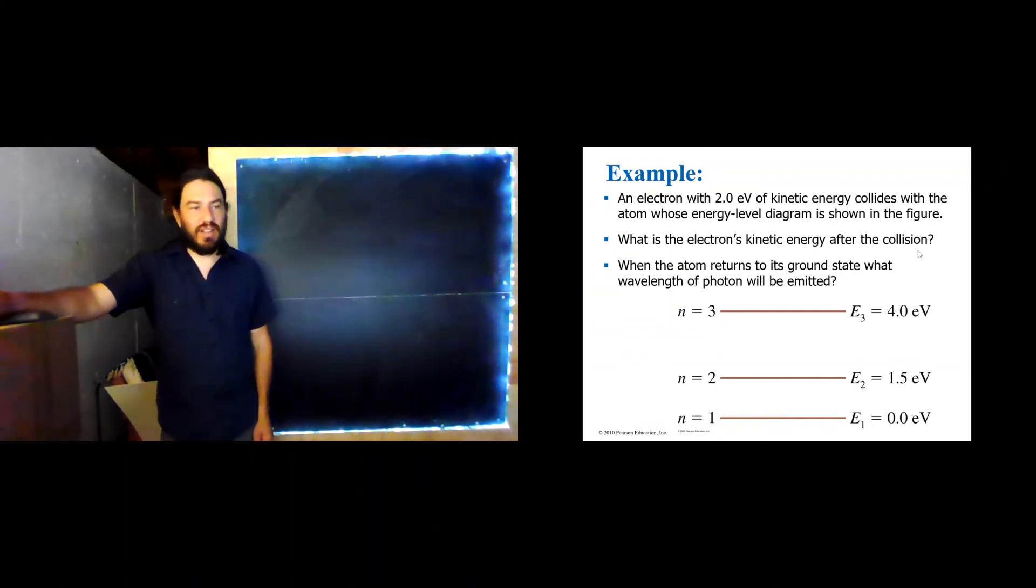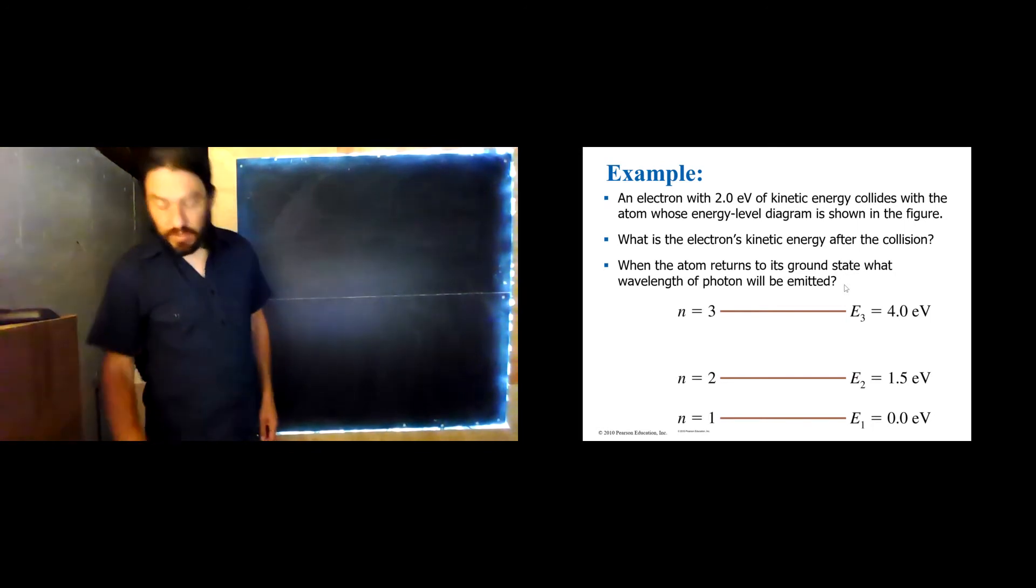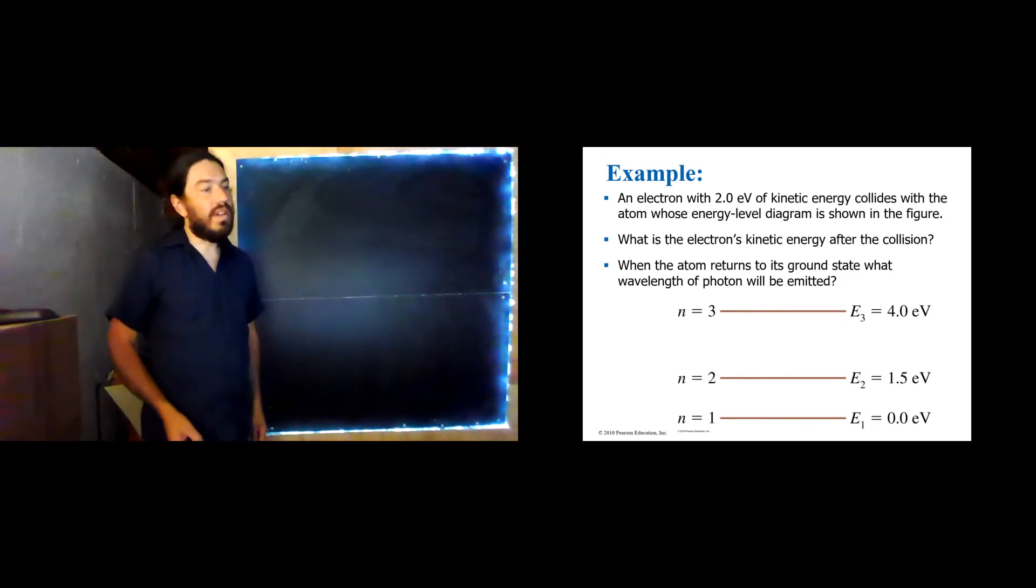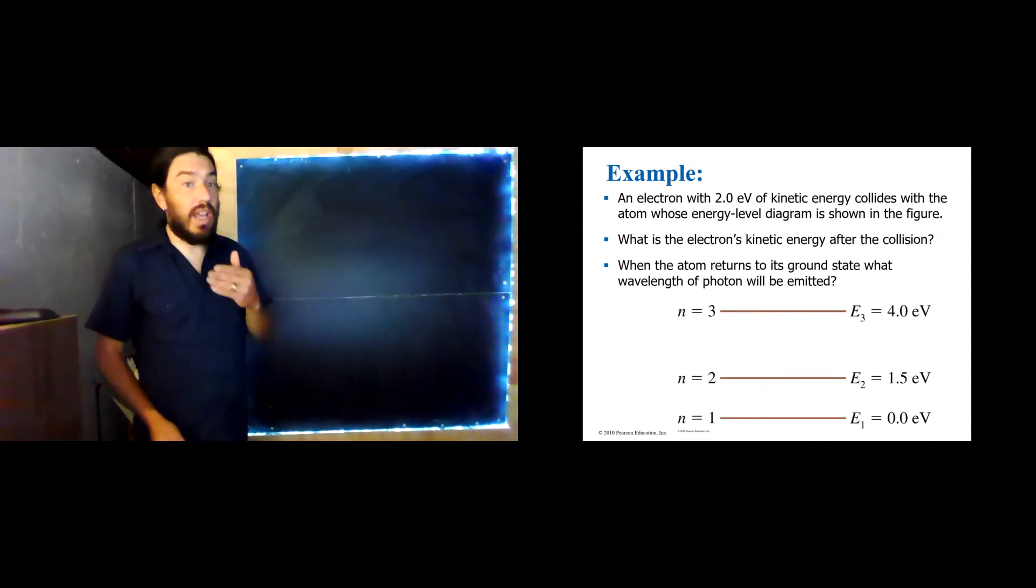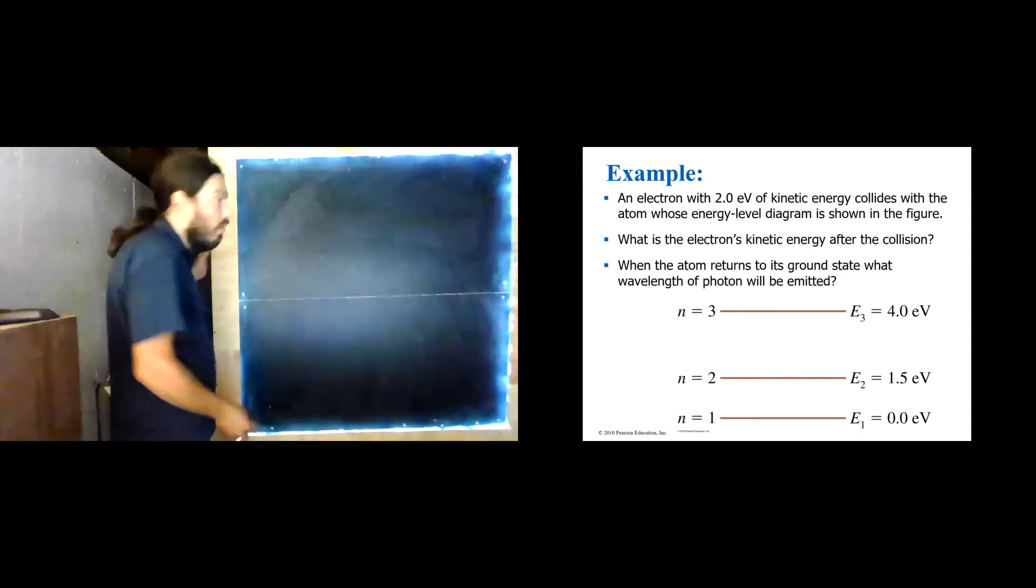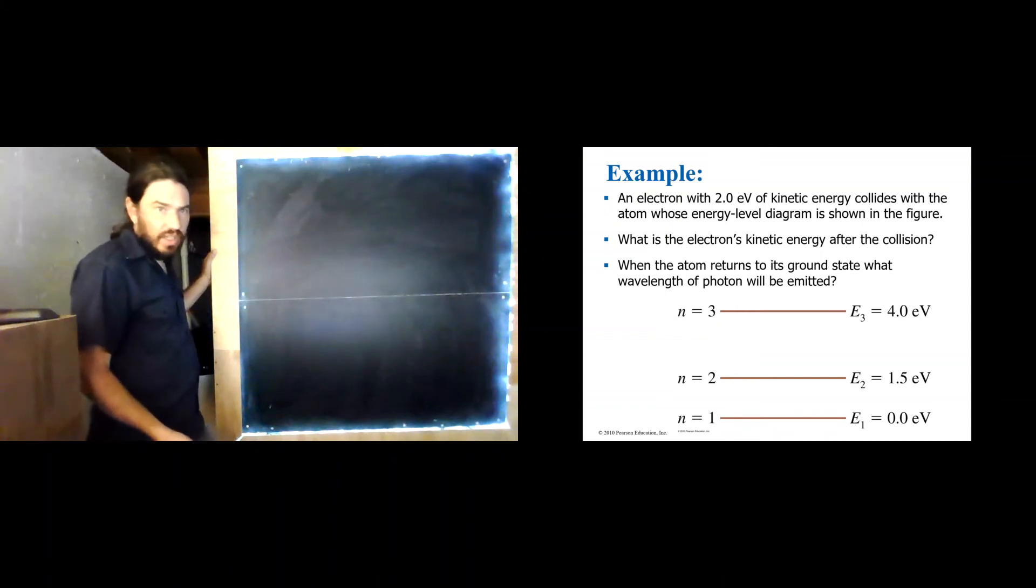Questions are, what is the electron's kinetic energy after the collision? And when the atom returns to its ground state, what wavelength of photon will be emitted? Okay, so for this first one, we just need to figure out, what is the electron's kinetic energy after the collision? So here we're talking about the electron that collides with the atom, and then, presumably, it keeps moving. Well, we want to use conservation of energy.